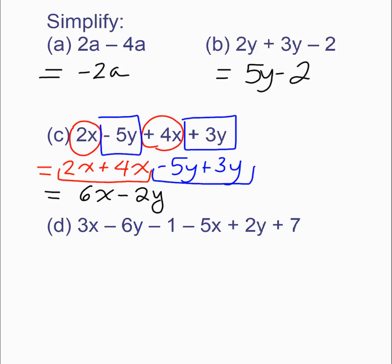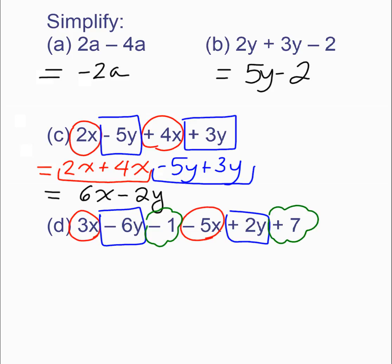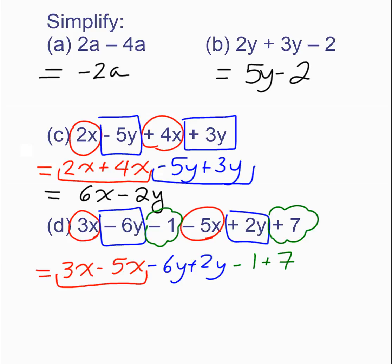That was more work than the previous two because those were already collected. For this last example, circle the x's, put squares around the y's, and put a squiggly around the constants. Then put your x's together, include the signs, put your y's together, and put your constants together. Then simplify: 3x's take away 5x's is negative 2x; negative 6y plus 2y is negative 4y; and negative 1 plus 7 is 6. That is the final answer — no like terms remain.